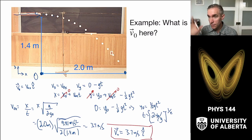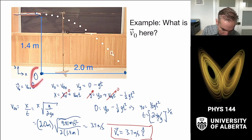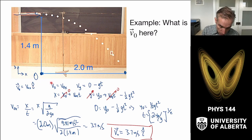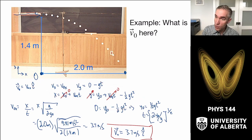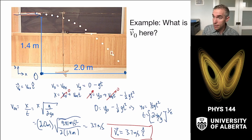To recap the basics of projectile motion: we set up a coordinate system and chose directions, wrote down the relevant projectile motion formulas, and used them as a system of equations to find the unknown variable. This approach applies generally to all projectile motion problems.